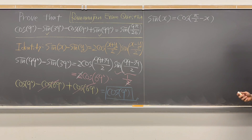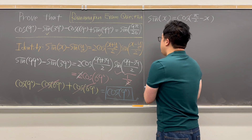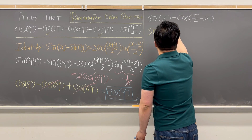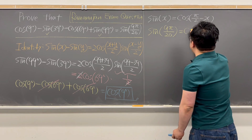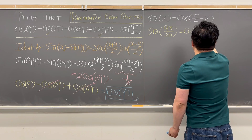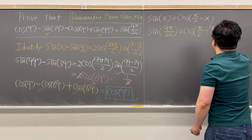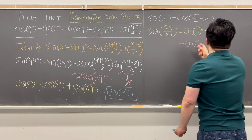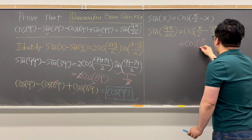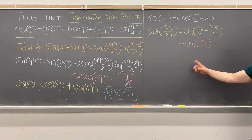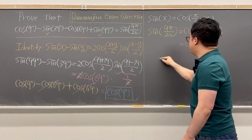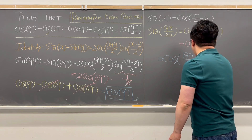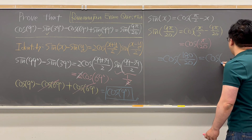This is the co-function identity. Working this out, sine(9π/20) equals cosine(π/2 − 9π/20), which equals cosine(π/20). We can rewrite this as cosine(180/20), which is also equal to cosine 9°.